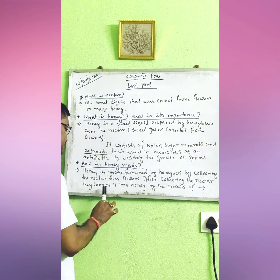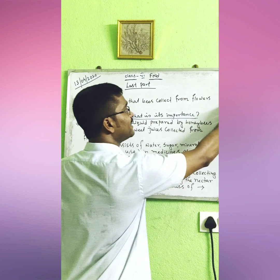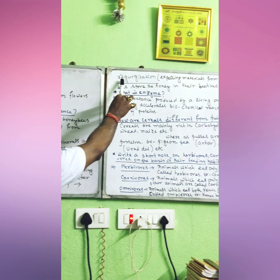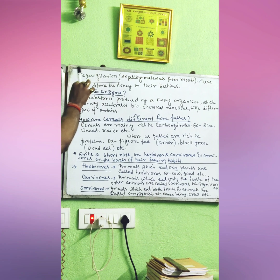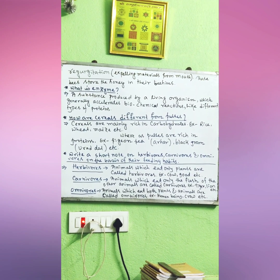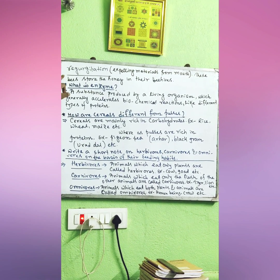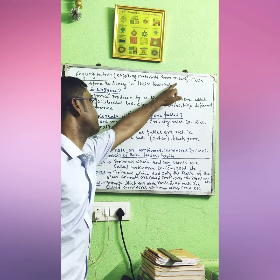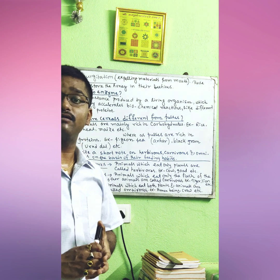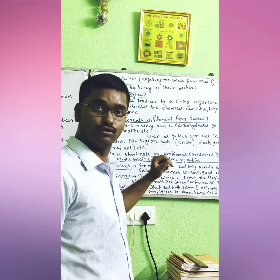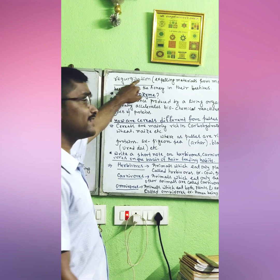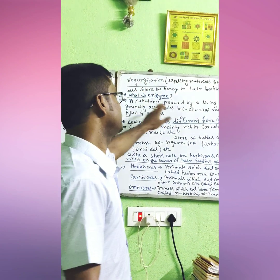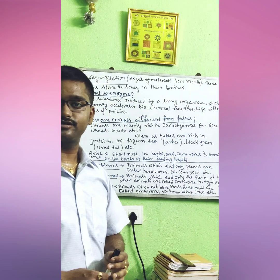After collecting the nectar, bees convert it into honey by the process of regurgitation. Keep this term in mind — regurgitation means expelling materials from the mouth, which we generally call vomiting. Honey bees collect nectar from flowers and vomit it into their beehives. This process of expelling from the mouth is specifically named regurgitation. Bees then store the honey in their beehives.